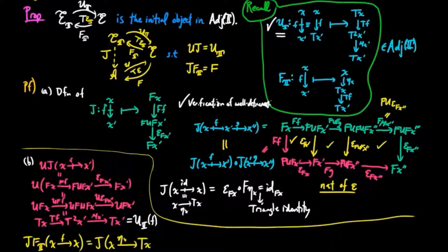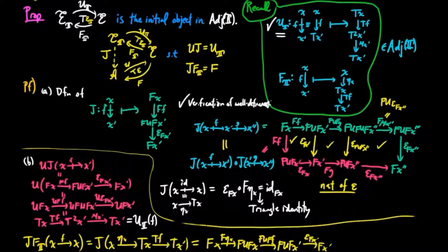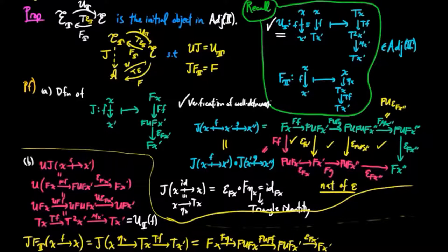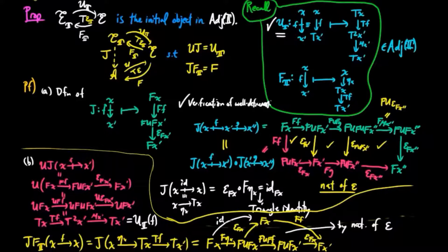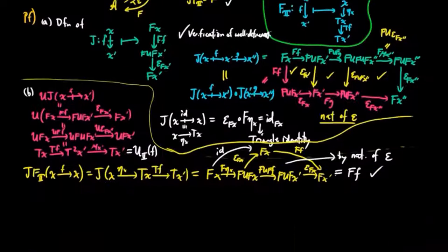We also have J composed with F_T on an E-morphism F equal to F η_X followed by FU FF followed by ε FX'. We can substitute FU FF followed by ε FX' by ε FX' followed by FF by naturality of ε. Then since F η_X followed by ε FX' equals the identity by the triangle identity, the composite reduces to FF, which is what we wanted to show.